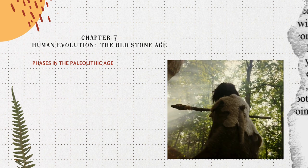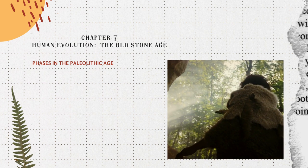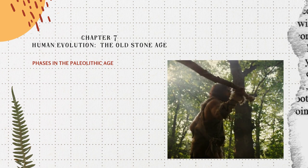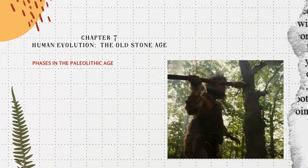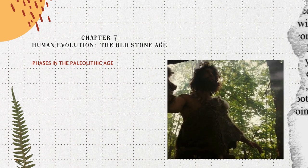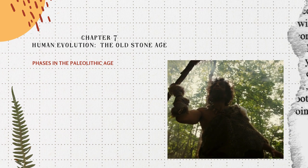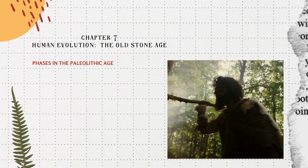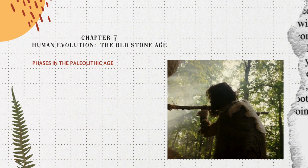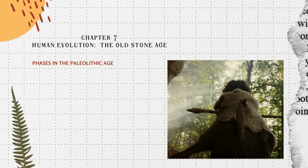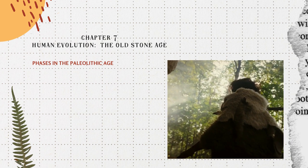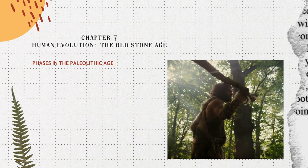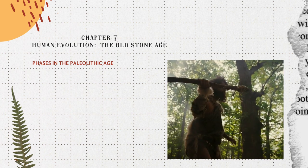Hand axes have been found in a deposit from the time of the second Himalayan inter-glaciation, when the climate became less humid. The people of the lower stone age seem to have principally been food gatherers. They took to small game hunting and lived also on fish and birds. The early or lower stone age in India may be associated with the people of the Homo sapiens group.